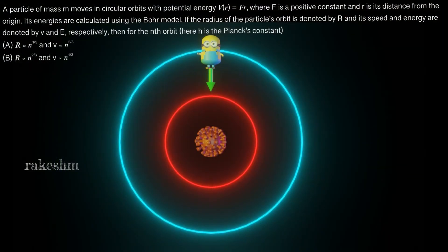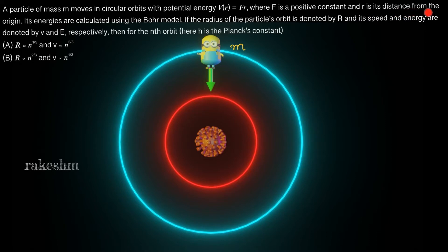Good morning dear students. Let us take a look at a question from JEE Advanced 2020. This question is from the modern physics chapter. A particle of mass m moves in circular orbits. Its potential energy is given by V(r) = F times r, where F is a positive constant and r is its distance from the origin. Its energies are calculated using the Bohr model.